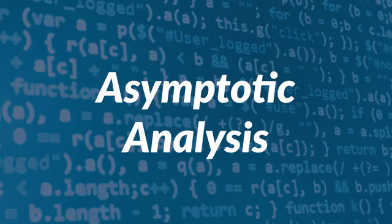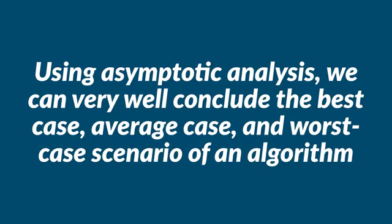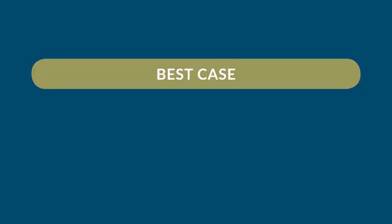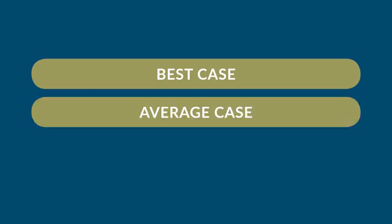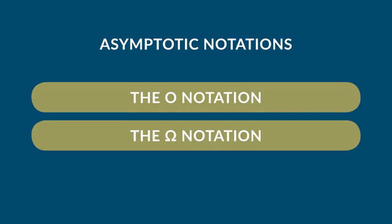Now let's talk about asymptotic analysis. Asymptotic analysis of an algorithm refers to defining the mathematical foundation or framing of its runtime performance. Using asymptotic analysis, we can conclude the best case, average case, and worst case scenario of an algorithm. Usually, the time required by an algorithm falls under three types: best case, which is the minimum time required for program execution; average case, which is the average time required; and worst case, which is the maximum time required. The commonly used asymptotic notations to calculate running time complexity are the O notation, the omega notation, and the theta notation.